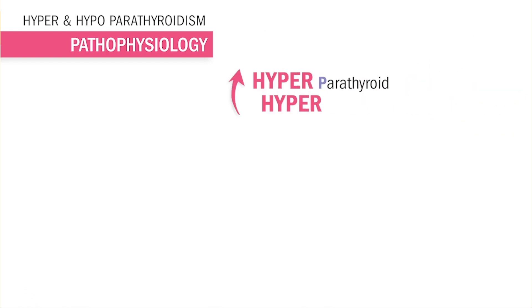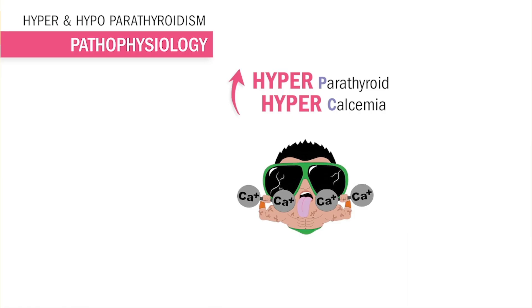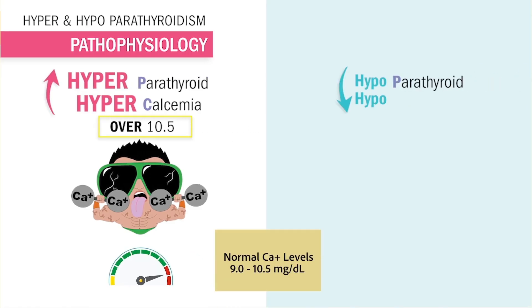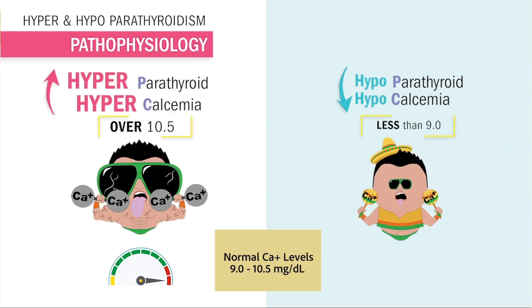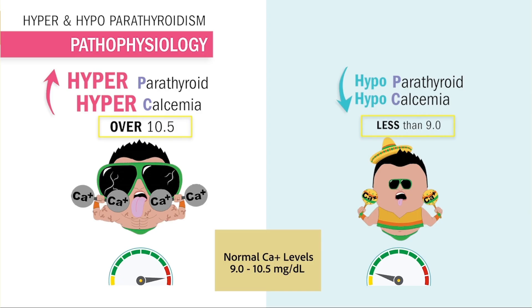For hyperparathyroidism, remember hypercalcemia — everything is swollen and slow with high calcium. And for hypoparathyroidism, that means hypocalcemia — remember Baja California from low, low calcium.